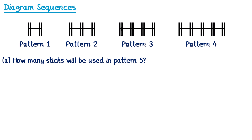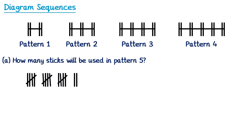To do this we draw pattern 1 and then we can draw pattern 2 by adding on three more sticks, one horizontally and two vertically. Then we can get pattern 3 by adding three more sticks and then pattern 4 by adding three more sticks again. So to get the next pattern we're always just adding on these three sticks. So we can get pattern 5 by adding on three more and then we just need to count up how many sticks there are. If I group these sticks into five it will be easier to count: we have 5, 10, 15 and then two more so 17. So the answer to this question is 17.